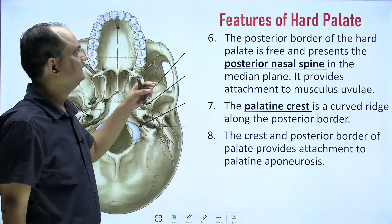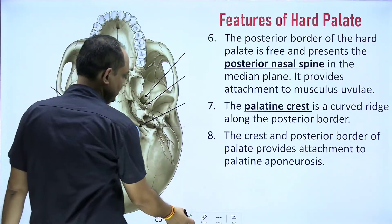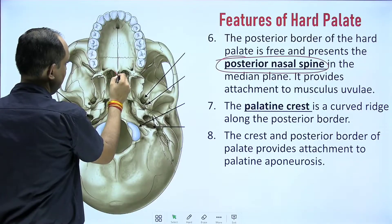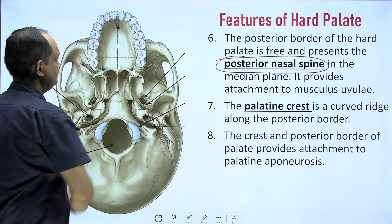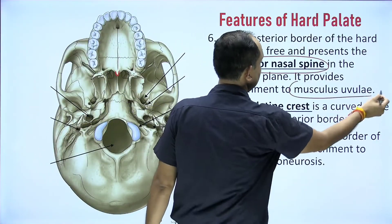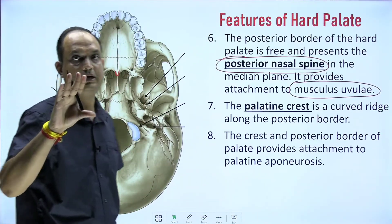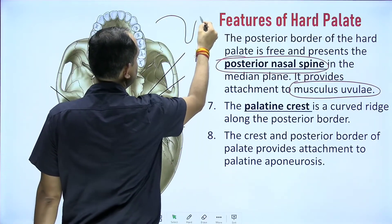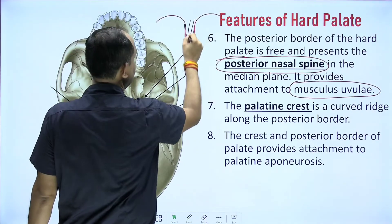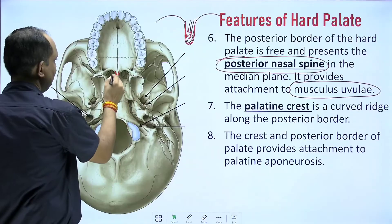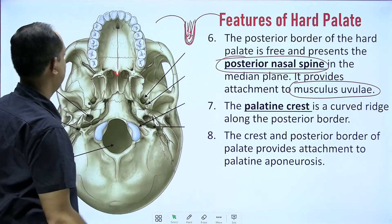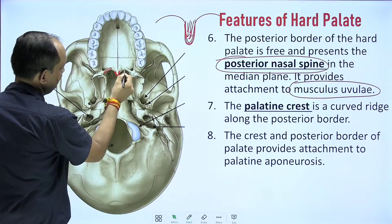Another important feature of the hard palate is the posterior nasal spine. When you see the hard palate in the midline posteriorly, you can feel a small projection — this is the posterior nasal spine. It gives attachment to the musculus uvulae. If you open your mouth in front of a mirror, you will see a small midline hanging muscle — that is your uvula. Inside the uvula is the musculus uvulae, which attaches to the posterior nasal spine.